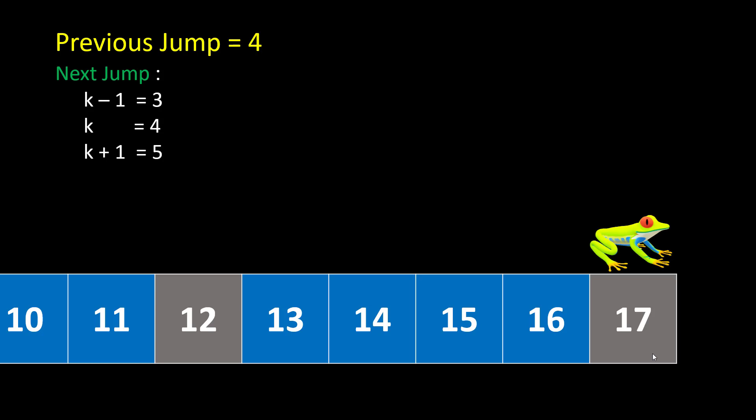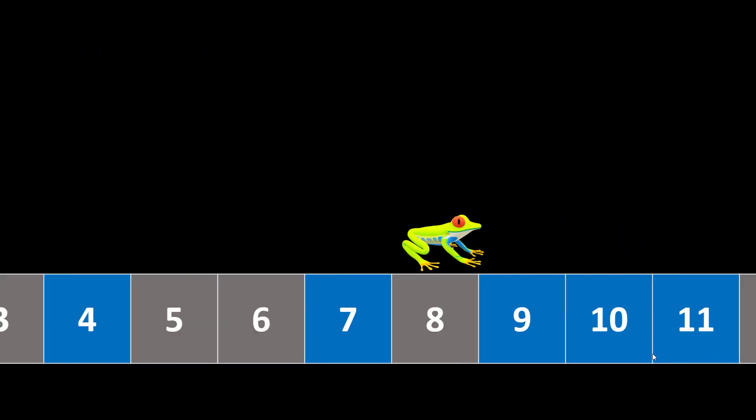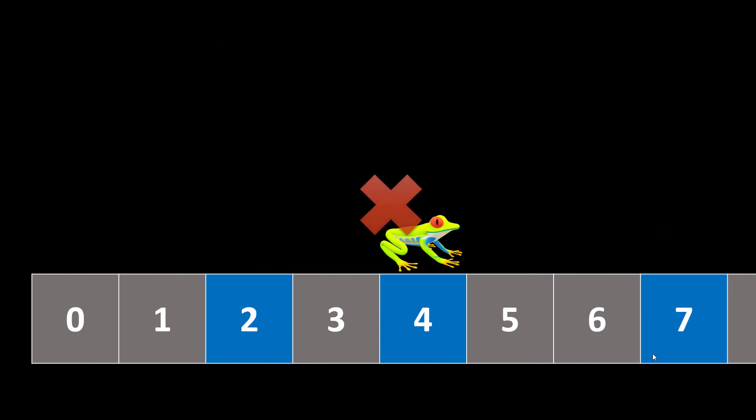In this approach we will often run into cases wherein our jump leads us to land on water, which is unnecessary. There will be a lot of combinations when we jump from one stone to another because the previous jump might change for the same index. This is also a valid solution, but it will take higher time complexity. We can optimize it a little by storing some of the intermediate data.